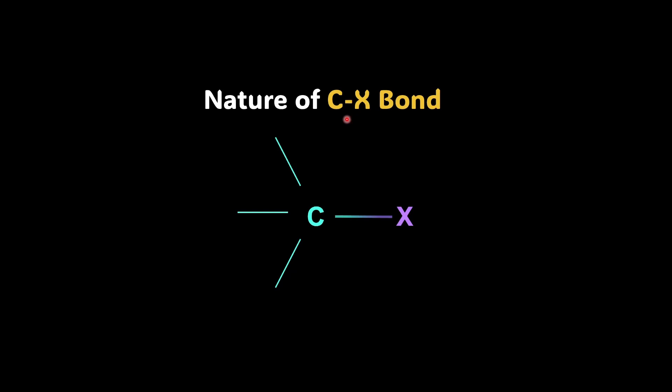Hi there! In this video, we will learn about the nature of the carbon-halogen bond. Knowing this nature of the carbon-halogen bond is very important to understand the physical and chemical properties of alkyl halides and aryl halides. The chemistry of this carbon-halogen bond is very interesting.